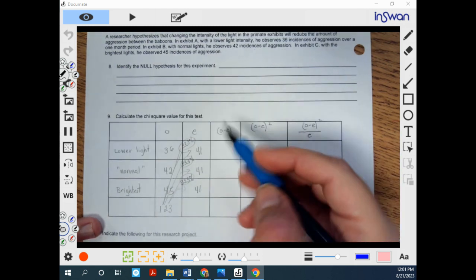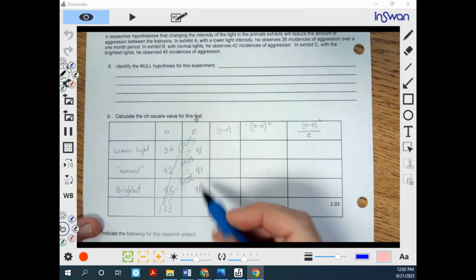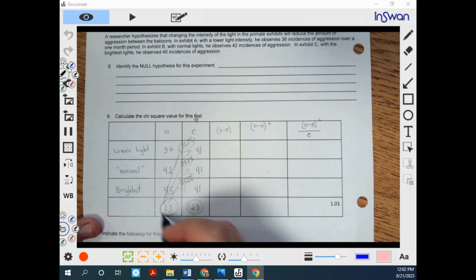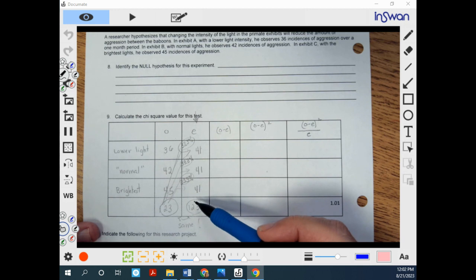Now, we're going to do our math. Before we do that, remember to check this column to make sure this is correct. Add these up. They should be 123. If these two numbers are the same, then you are on the right track.